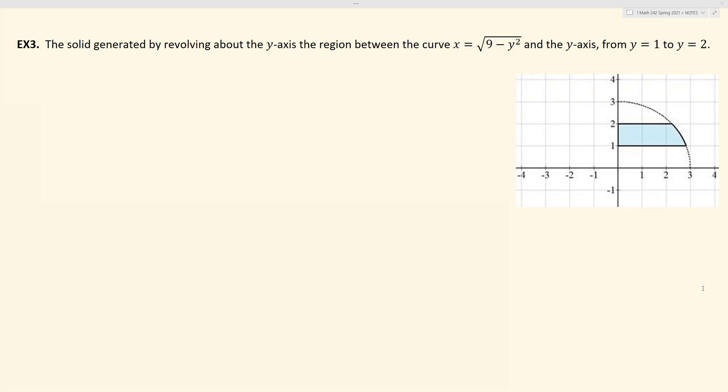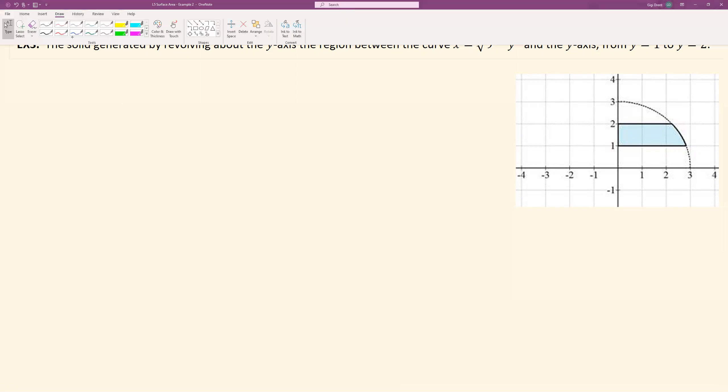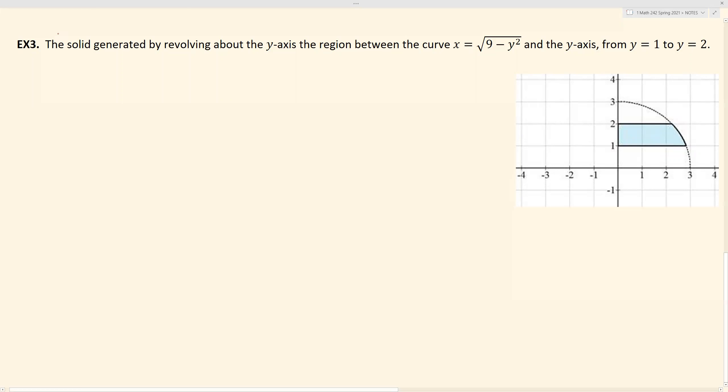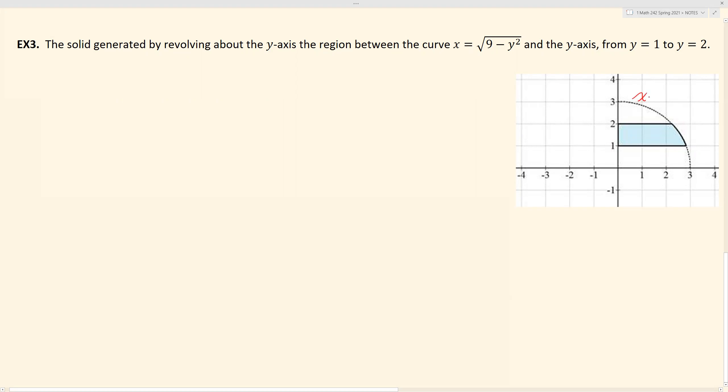All right, so let's again take a look at the area that we are considering. The equation of this graph here is x equals square root of 9 minus y squared. That is a circle-looking equation, right? This represents part of the circle, but we are only considering this specific part here.